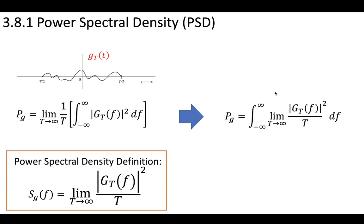This power spectral density is related to the energy spectral density — this looks like our energy spectral density. We've been able to apply our knowledge of the energy spectral density to power by making this truncated signal get larger and larger so that the energy signal continues to approach the power signal until, at infinity, it is a power signal. Therefore, using this limit, we can define the power spectral density, built up from our knowledge of energy signals.